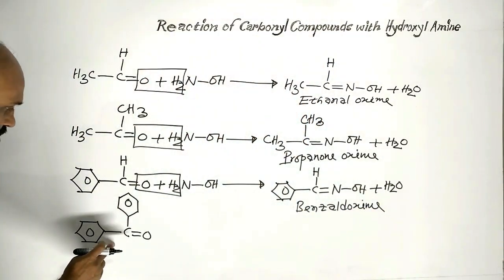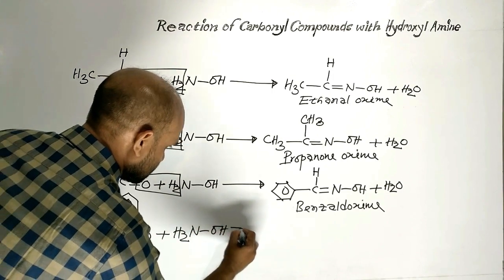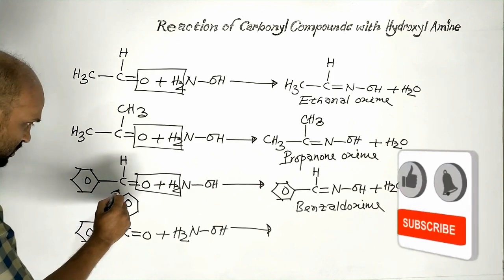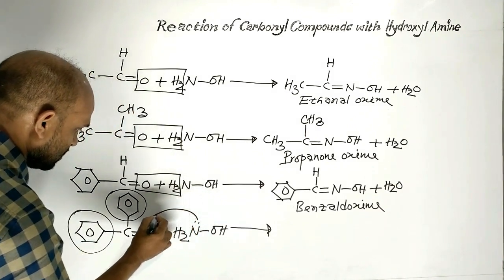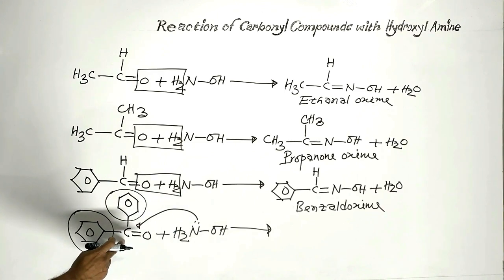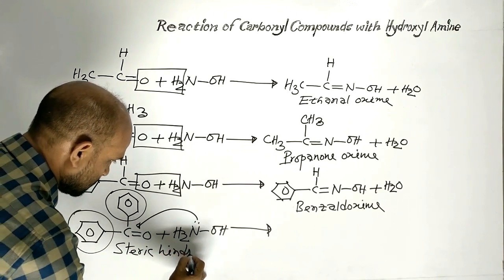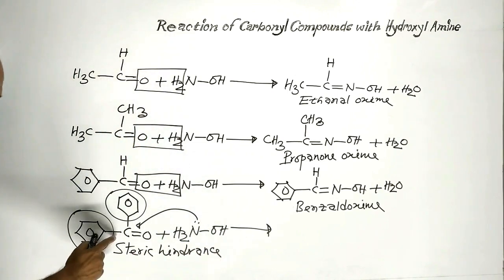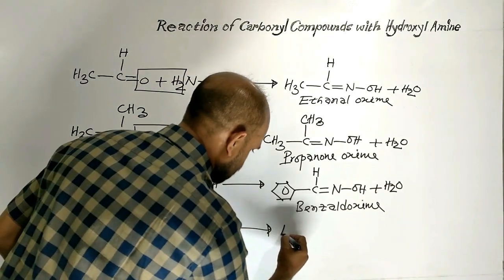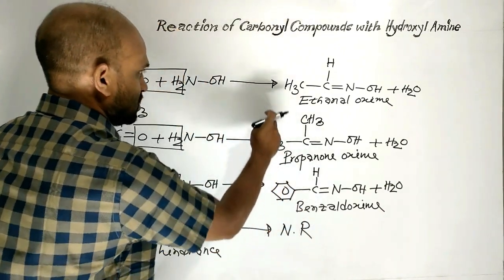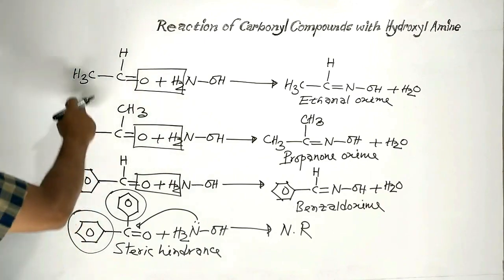Now, the reaction of benzophenone and hydroxylamine. In this case, there are two big groups. That is why hydroxylamine cannot attack this carbonyl carbon because of the steric hindrance. Because of the steric hindrance, benzophenone doesn't undergo reaction with hydroxylamine — that is, no reaction. Oximes are crystalline compounds, and that is why these reactions are used to identify carbonyl compounds.